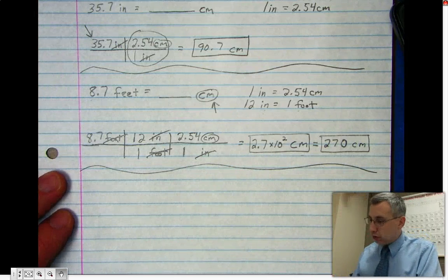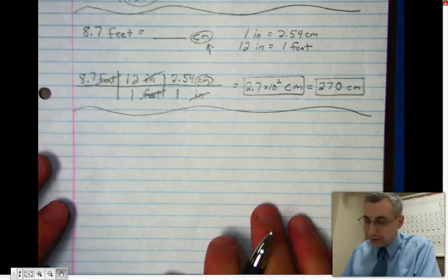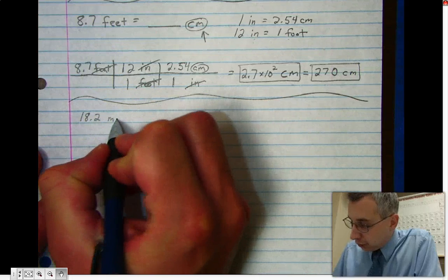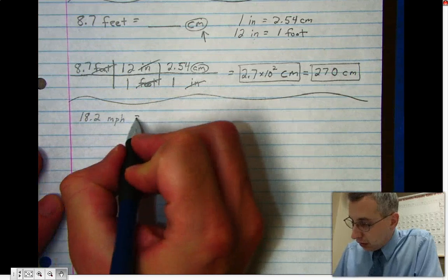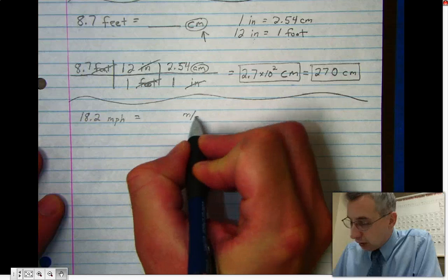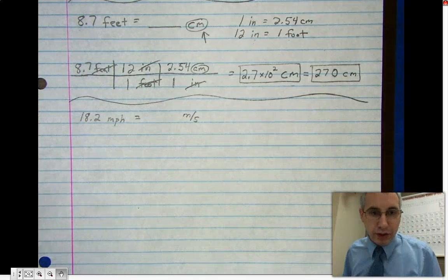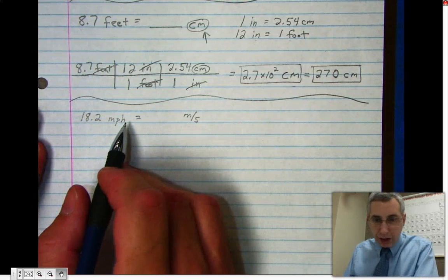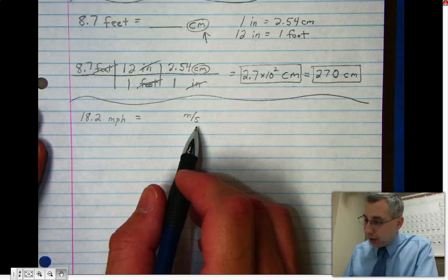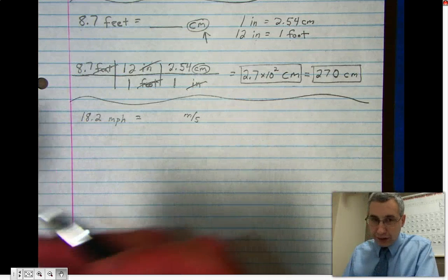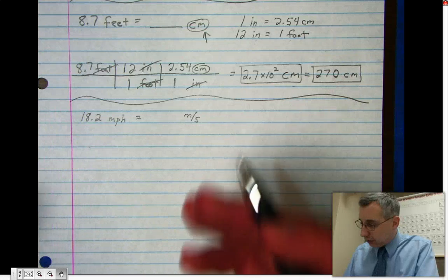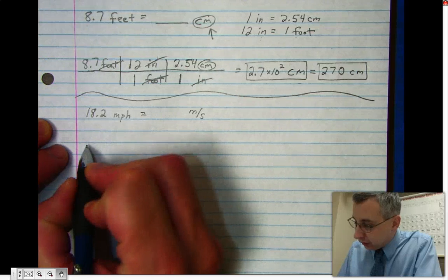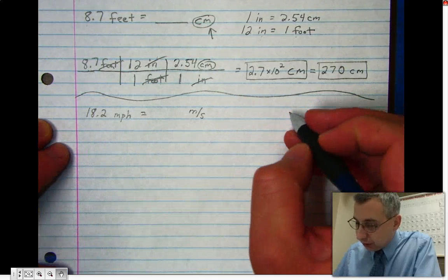Next we're going to do an even more advanced problem. Let's take 18.2 miles per hour and convert it into meters per second. This is a problem you might run into when doing physics, because real-world situations in the United States can be in miles per hour, but meters per second is the SI system in which you'll do a lot of your math calculations in physics.